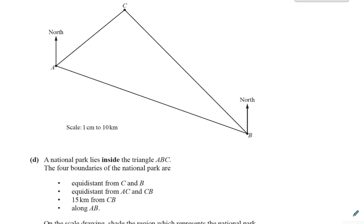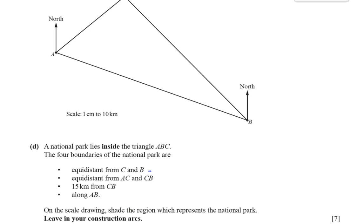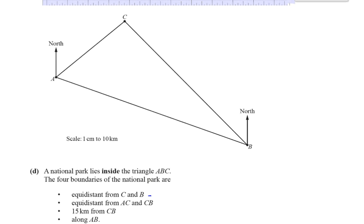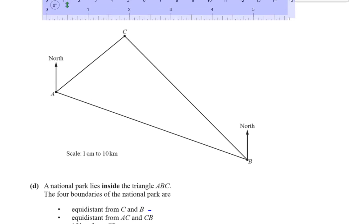We have part D of the same question. A national park lies inside the triangle ABC. The four boundaries of the national park are: equal distance from C and B, equal distance from AC and BC, 15 kilometers from CB, and along AB. On the scale drawing, shade the region which represents the national park, leaving in your construction arcs. So we're going to have to construct all of these loci.